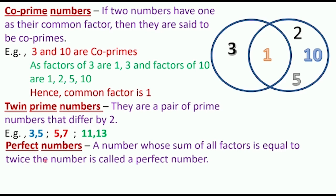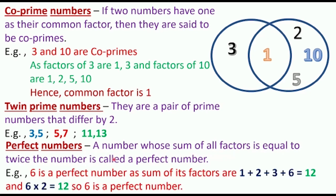Now, what are perfect numbers? A number whose sum of all factors is equal to twice the number is called a perfect number. We have to find the sum of all factors of the number. For example, 6 is a perfect number. The factors of 6 are 1, 2, 3, and 6. When we find the sum: 1 plus 2 plus 3 plus 6 equals 12.